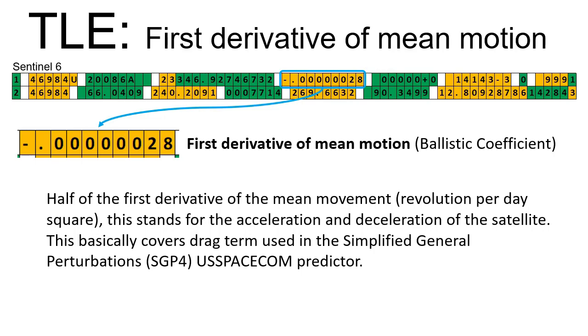First derivative of mean motion, or so-called ballistic coefficient. Half of the first derivative of the mean movement, this stands for the acceleration and deceleration of the satellite.